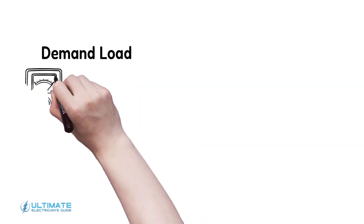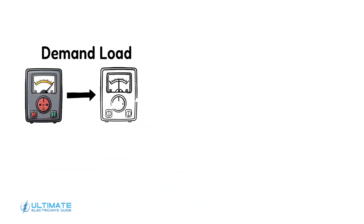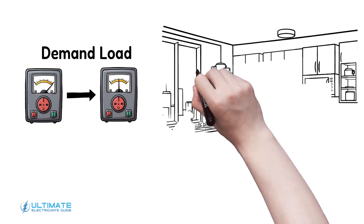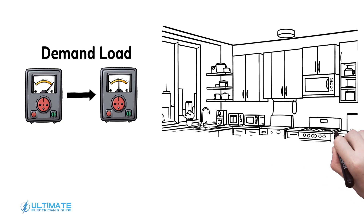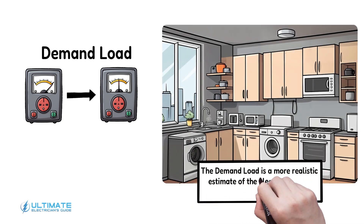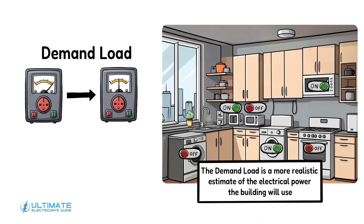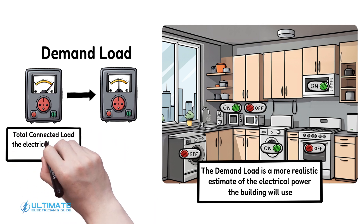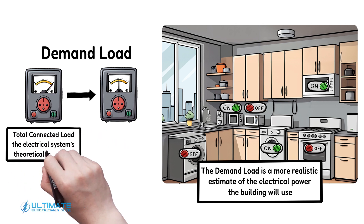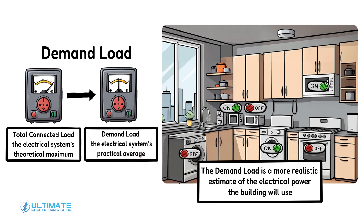This is where the concept of the demand load comes in. The demand load is a more realistic estimate of the electrical power the building will use. It considers typical usage patterns — not all residents will do laundry or cook at the same time. So while the total connected load is like the electrical system's theoretical maximum, the demand load is its practical average.